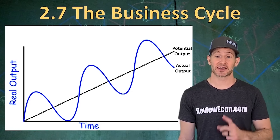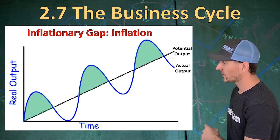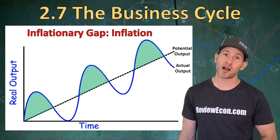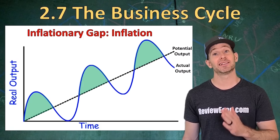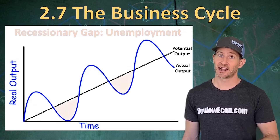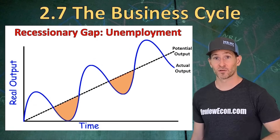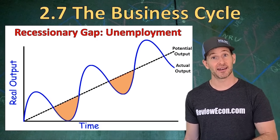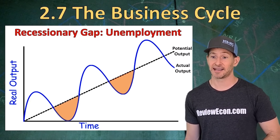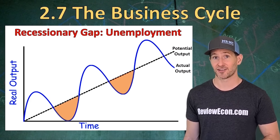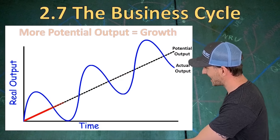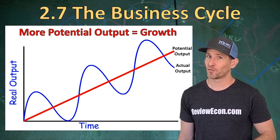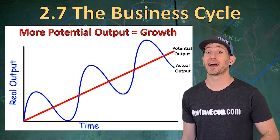As you will learn in future units, occasionally our GDP can be above our long-run potential output — when that happens, we call it an inflationary gap, and the problem is rising prices. On the flip side, when actual output is below long-run potential output, we call that a recessionary gap, where unemployment is usually high and we may be in a recession. When our economy is functioning properly, we'll also have an upward trend in the long run — that is our potential output, and when it increases, we call that economic growth.